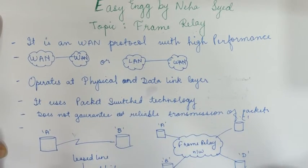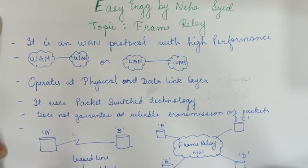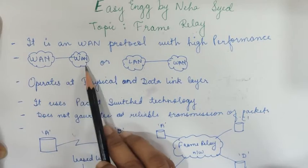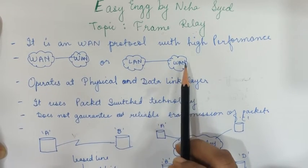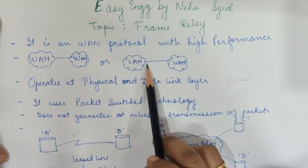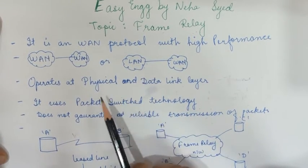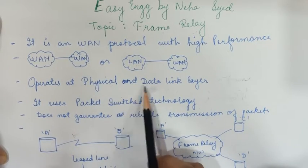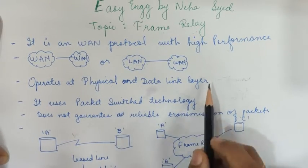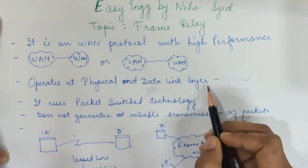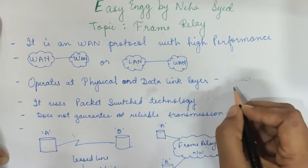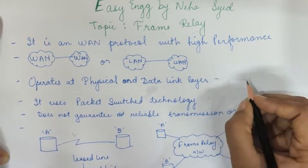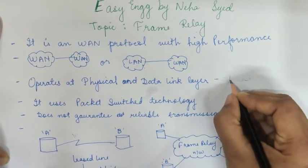Frame relay is a wide area network protocol with very high performance. It is used for connecting two different WANs, or for connecting a LAN to a WAN or a WAN to a LAN. It operates at the physical and data link layer, so the basic unit for transmission of data is a frame.